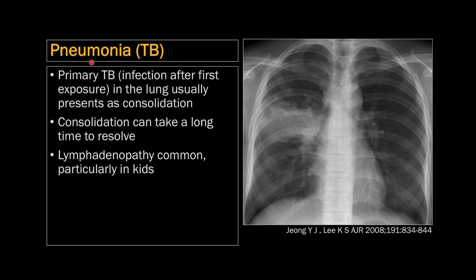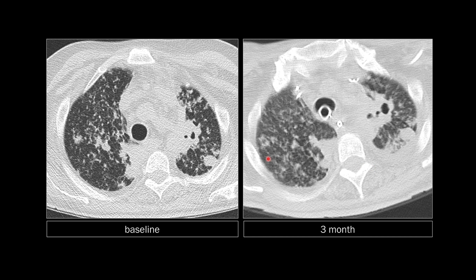Primary TB — infection after the first exposure — usually presents as a consolidation in the lung, particularly in adults. These consolidations can take a long time to resolve, especially without appropriate antibiotics. Lymphadenopathy is common, especially in kids. Most of the time when you see TB in the lungs you'll not only have consolidation but also tree-in-bud opacity, because the infection spreads through the airways causing mucus plugging in multiple areas.